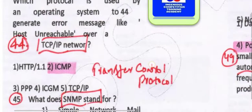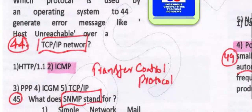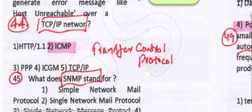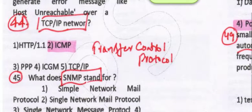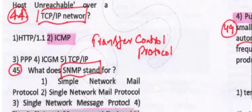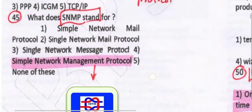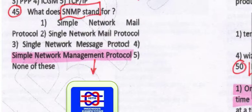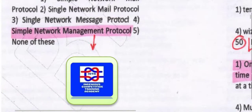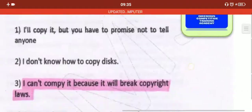We have protocols TCP and IP. One type of network is ICMP. TCP stands for Transfer Control Protocol and IP for Internet Protocol. SNMP stands for Simple Network Management Protocol — SNMP is Simple Network Management Protocol.